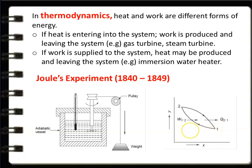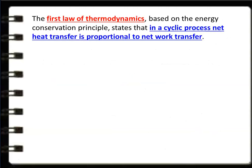Joule conducted many such experiments over nine years, changing the fluid, the weight, and the dimensions of the stirrer — varying different parameters — and drew many curves. Finally, he concluded there is a relationship between heat transfer and work transfer in a cyclic process. That conclusion is called the First Law of Thermodynamics: in a cyclic process, net heat transfer is proportional to net work transfer.